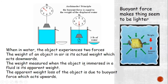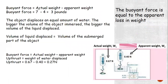When in water, the object experiences two forces: the actual weight acting in the downward direction, and the apparent weight shown when the object is immersed in a fluid. The apparent weight is less because the object is experiencing an upthrust, which cancels out part of the gravitational force. The four pounds shown on the scale is the net effect — the apparent loss of weight is due to the buoyant force acting in the upward direction. The buoyant force equals the actual weight minus the apparent weight: seven minus four equals three pounds.